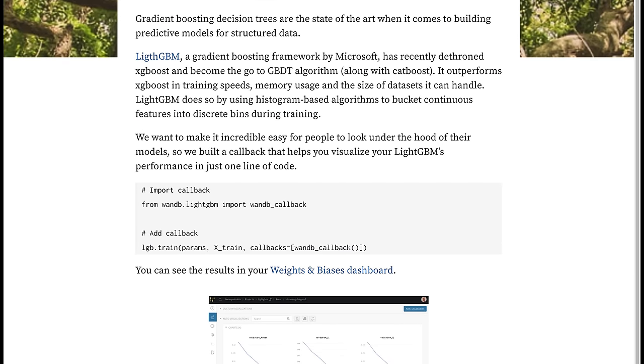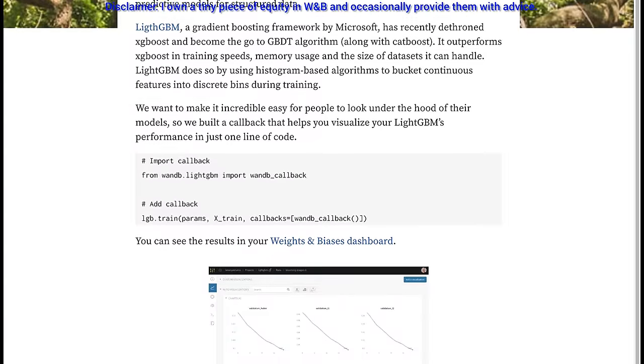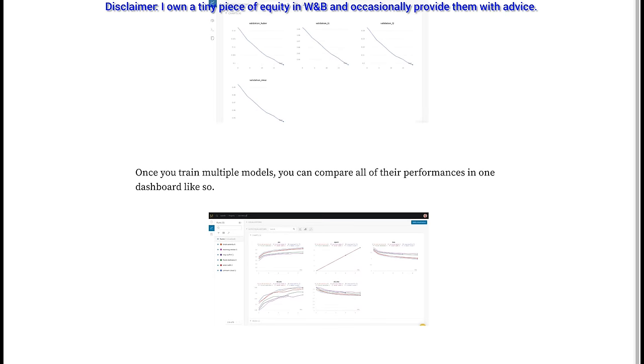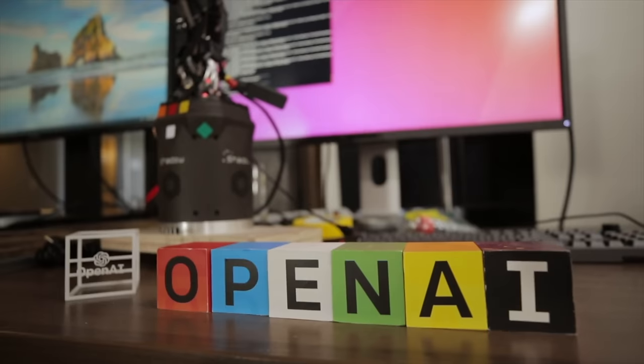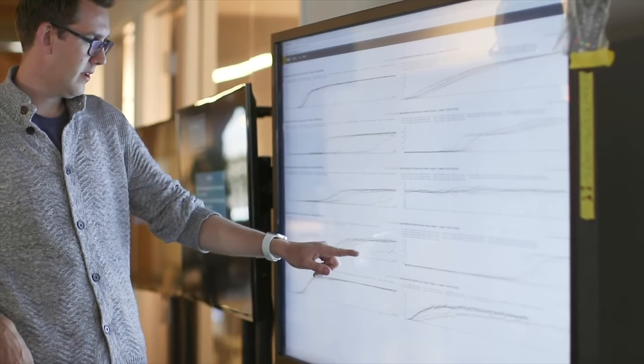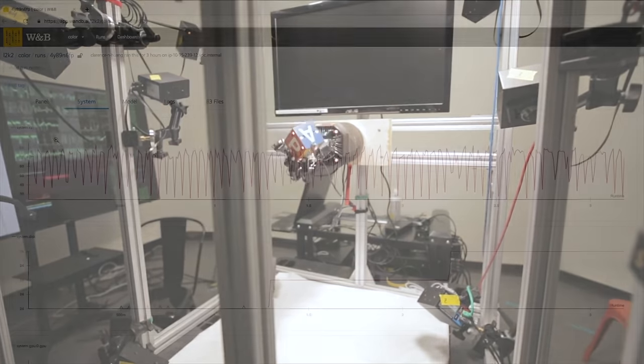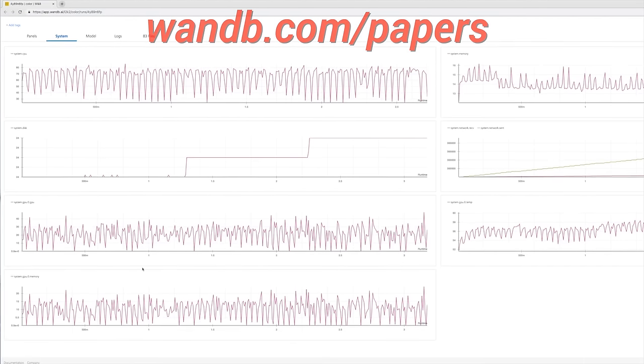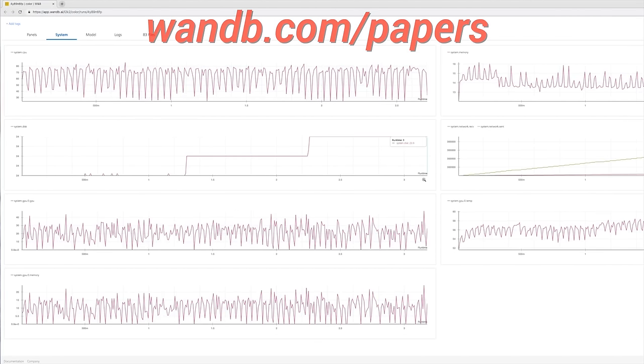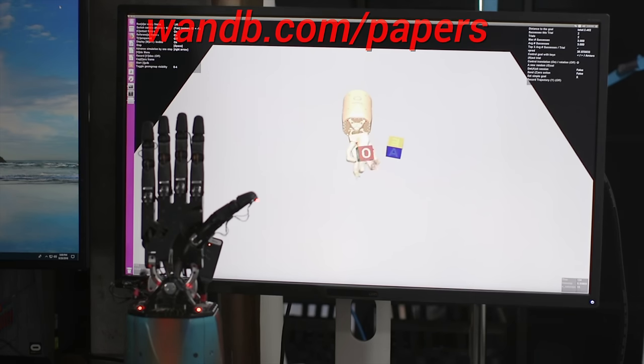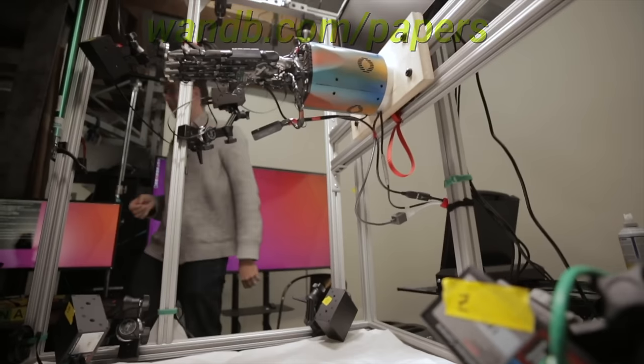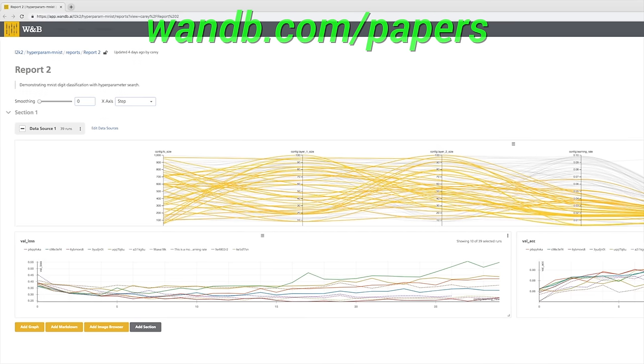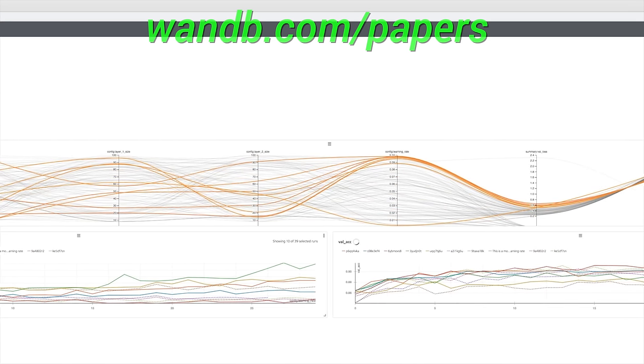This episode has been supported by Weights and Biases. Here, they show you how to make it to the top of Kaggle leaderboards by using Weights and Biases to find the best model faster than everyone else. Weights and Biases provides tools to track your experiments in your deep learning projects. Their system is designed to save you a ton of time and money, and it is actively used in projects at prestigious labs such as OpenAI, Toyota Research, GitHub, and more. And, the best part is that if you are an academic or have an open source project, you can use their tools for free. It really is as good as it gets. Make sure to visit them through wnb.com slash papers or just click the link in the video description, and you can get a free demo today. Our thanks to Weights and Biases for their longstanding support, and for helping us make better videos for you.